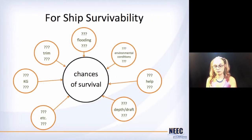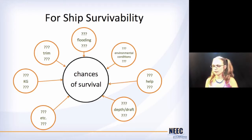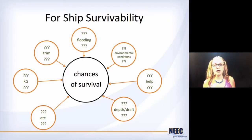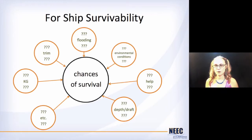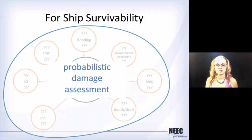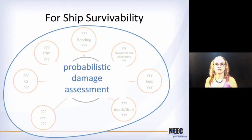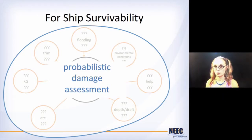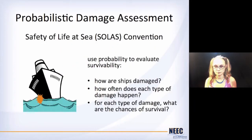For ship survivability, we can do some calculations on damage stability. We can figure out how the GZ curve changes when compartments get flooded, and how that affects the KG, the trim, and the depth and draft. We can figure all that out — except that we don't know which one is going to be applicable at the time of the damage because we don't know where the damage is going to be. So all of that is still kind of uncertain. We're going to take all of that together and use this probabilistic damage assessment to come up with one clear picture of how safe our ship is.